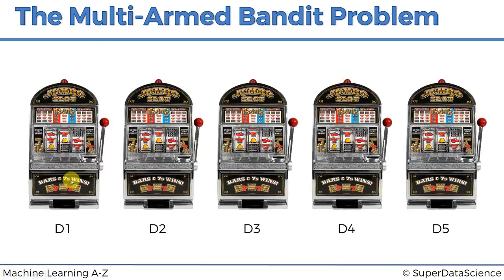Instead of having slot machines, each one of these is a different ad, and you want to figure out which one is the best performing ad. But you don't have time or resources to do an A/B test — you want to figure it out on the fly. That's when you would apply one of these algorithms. There are also lots of other modern problems similar to the multi-armed bandit problem where these algorithms are valid.